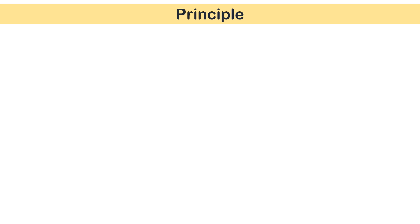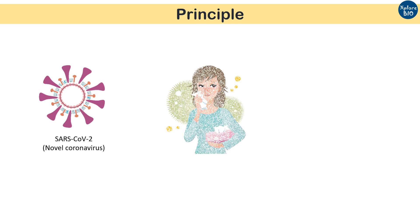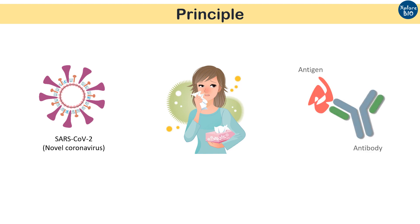The rapid antigen test detects the presence of SARS-CoV-2 or novel coronavirus surface protein or antigen in the patient's upper respiratory tract using specific antibodies. This test is especially beneficial to identify people who have a high level of viral infection. It is based on the principle of antigen-antibody binding.